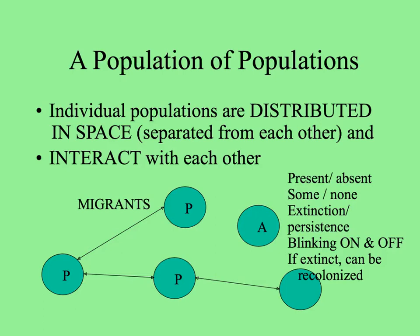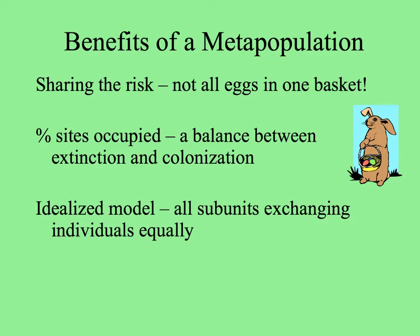If a species has gone locally extinct, it could be recolonized from another patch. You can see there are benefits of a metapopulation because all the eggs are not in one basket — all the individuals are not just in one big population. The percentage of sites occupied in the metapopulation model is a balance between extinction, blinking out, and colonization, blinking on.